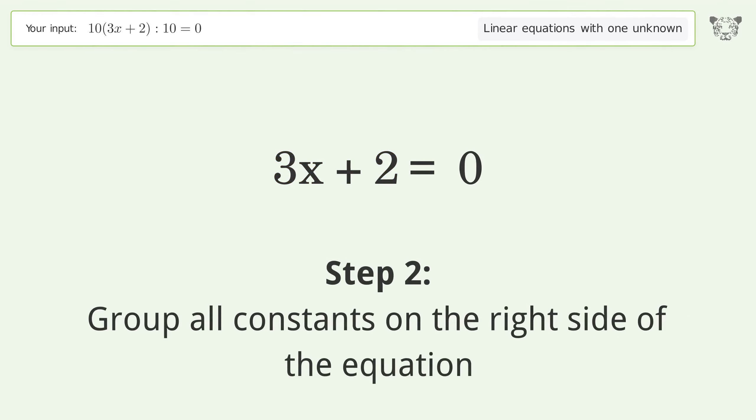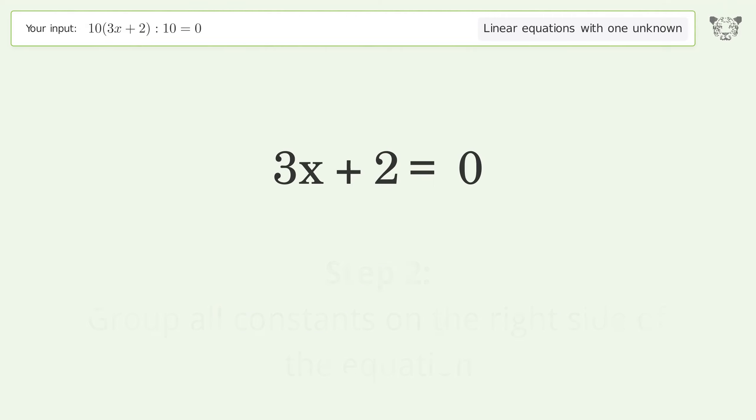Group all constants on the right side of the equation. Subtract 2 from both sides. Simplify the arithmetic.